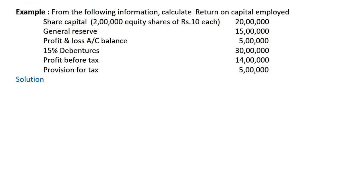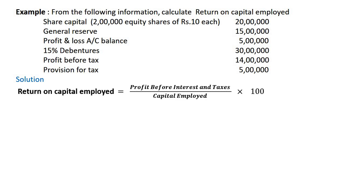Let us see an example for calculation of return on capital employed. From the following information, calculate return on capital employed: 2 lakh equity shares of rupees 10 each totaling 20 lakh; general reserve 15,000 rupees; profit and loss account balance 5 lakh; 15% debentures of 30 lakh rupees; profit before tax 14 lakh rupees; and provision for tax 5 lakh rupees. The formula is profit before interest and taxes divided by capital employed, multiplied by 100.